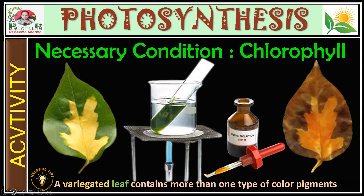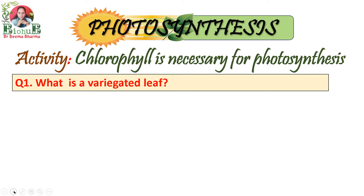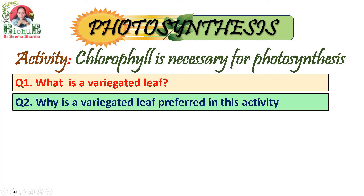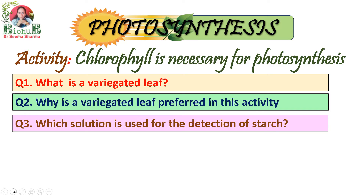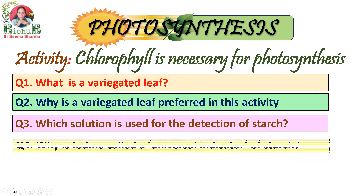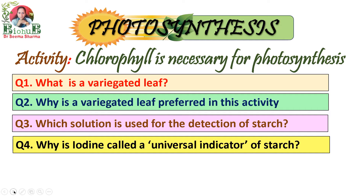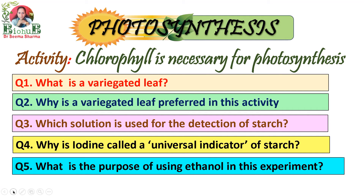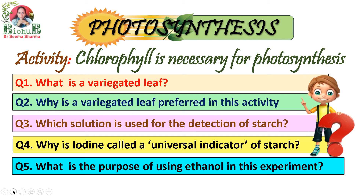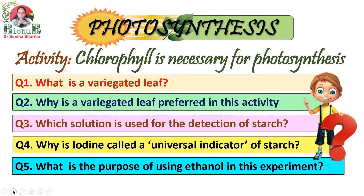To perform this activity you need a special leaf — a variegated leaf. In this video you will not just learn what a variegated leaf is, but also why it is preferred in this activity, which solution is used for the detection of starch, why iodine is called a universal indicator of starch, and what is the purpose of using ethanol in this experiment. Stay connected and watch this video till the end.